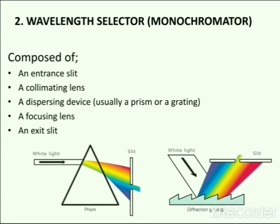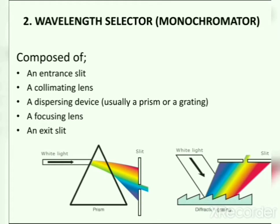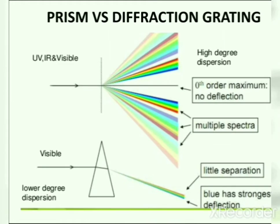There are two types of dispersing devices used: prism and grating. A prism is made up of glass, quartz, and silica, while a grating is made up of aluminium. Glass is avoided in the composition of the prism because it absorbs radiation. Prism provides a lower degree of dispersion, while grating is used when higher dispersion is required.